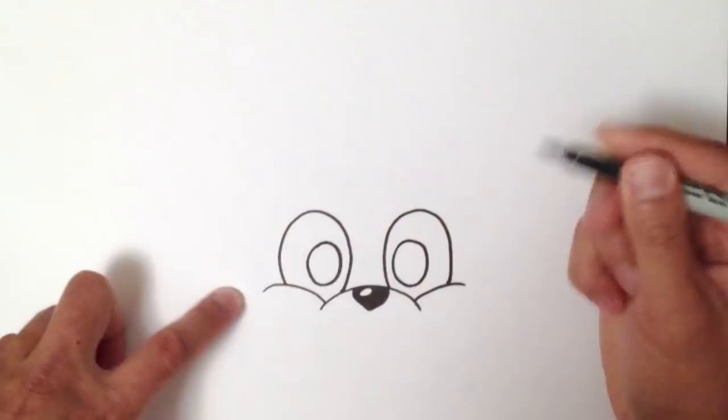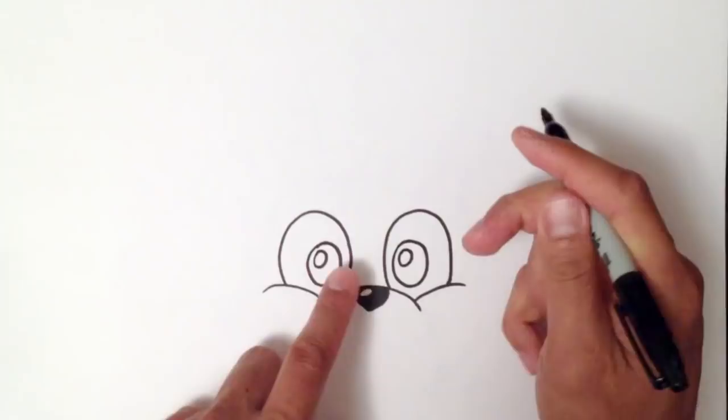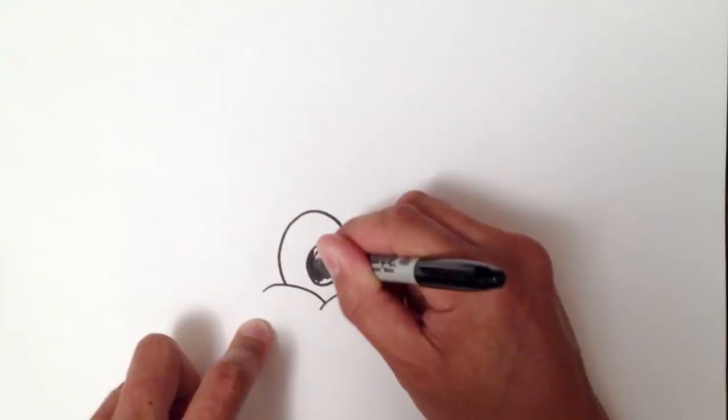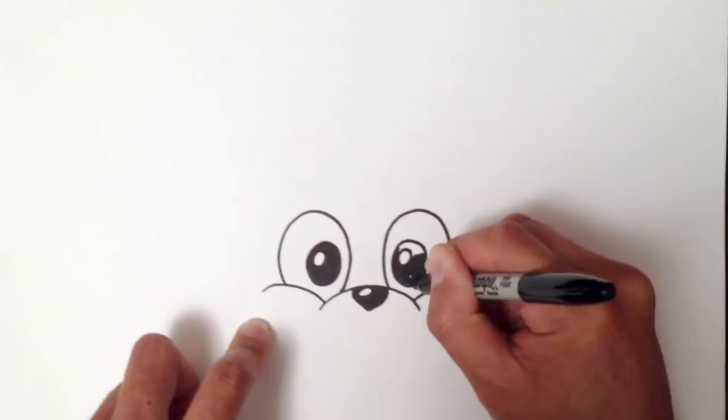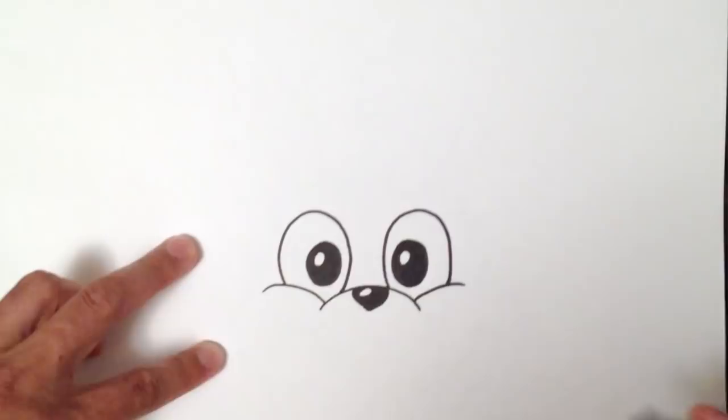Then I'll do a highlight just to the left of center, and then I'll color that in. And the other side.